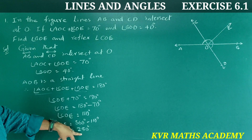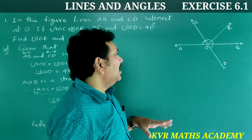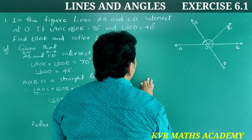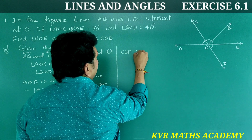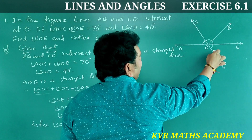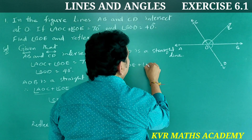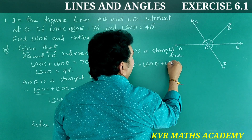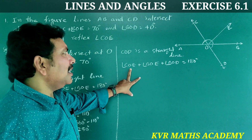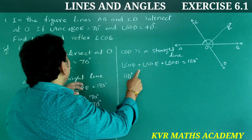Reflex angle COE is 250 degrees. Now, to find angle BOE, CD is also a straight line. COD is a straight line, so the sum of angles on CD also equals 180 degrees. Therefore, angle COE plus angle BOE plus angle BOD is equal to 180 degrees. We already found angle COE is 110 degrees, and we need to find angle BOE.